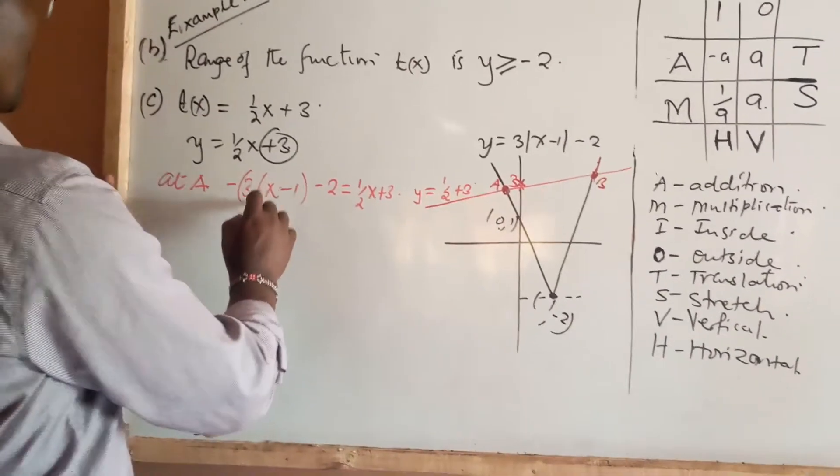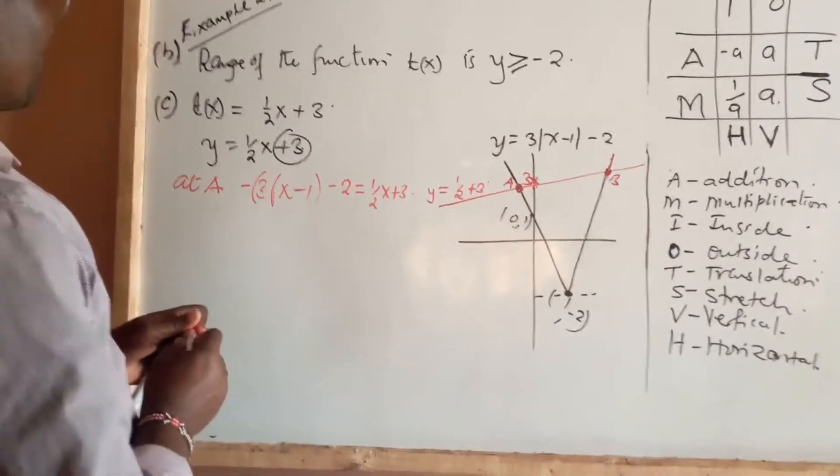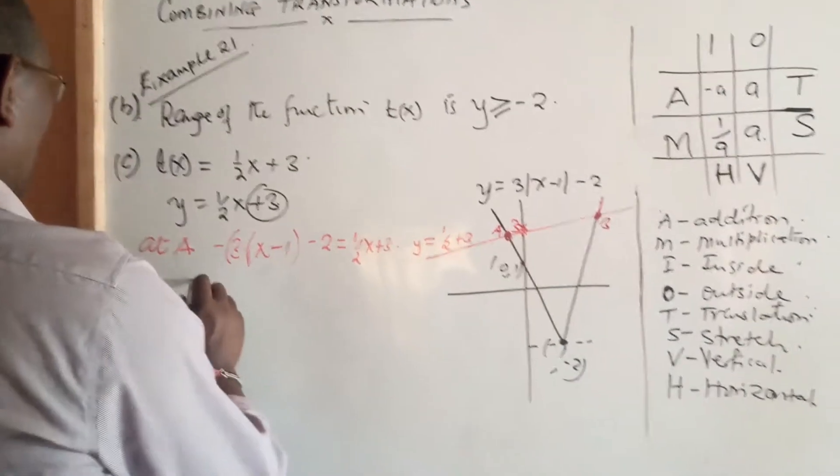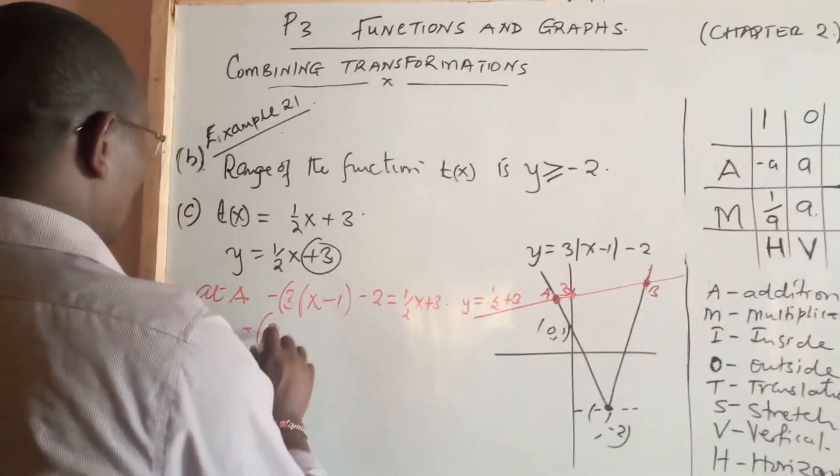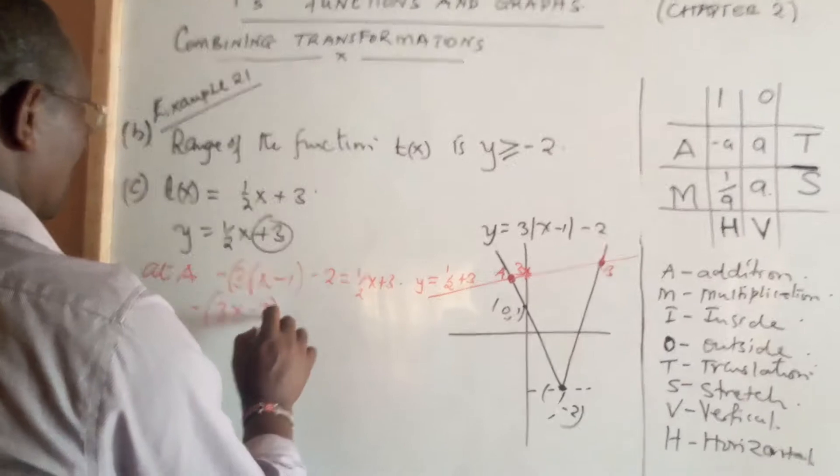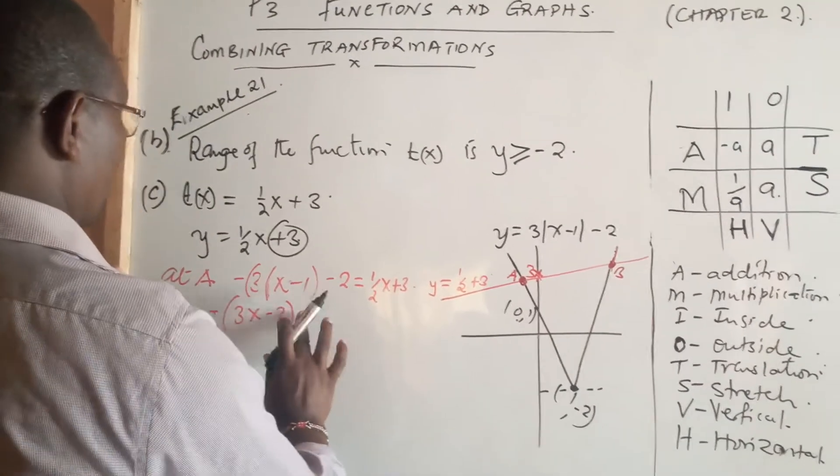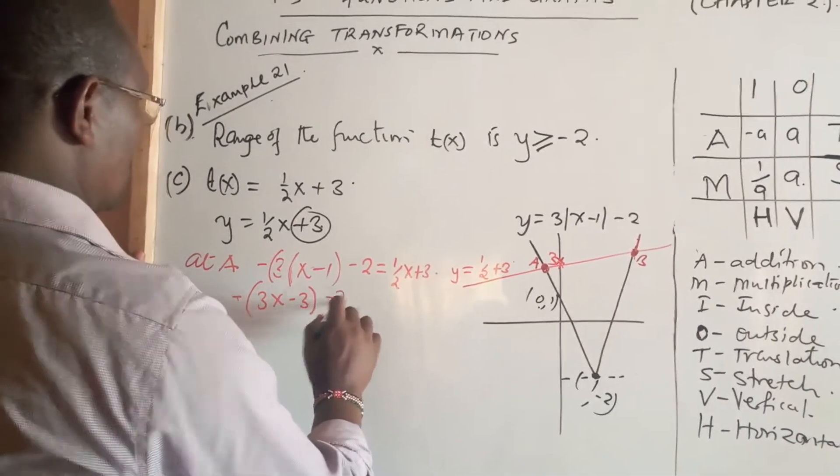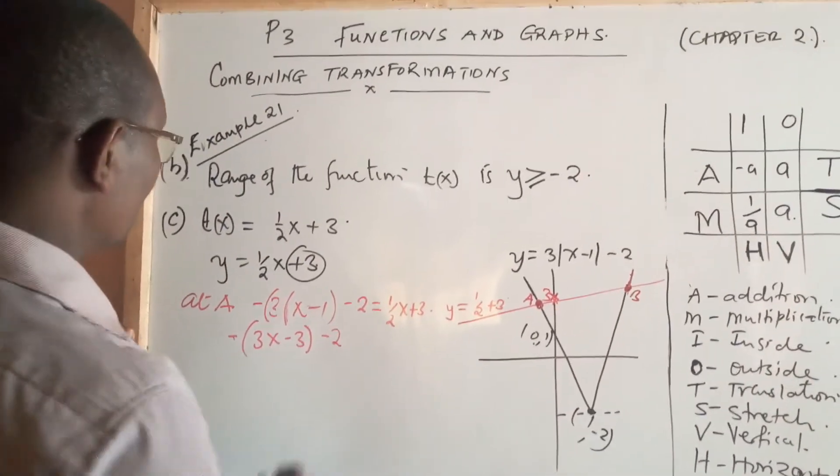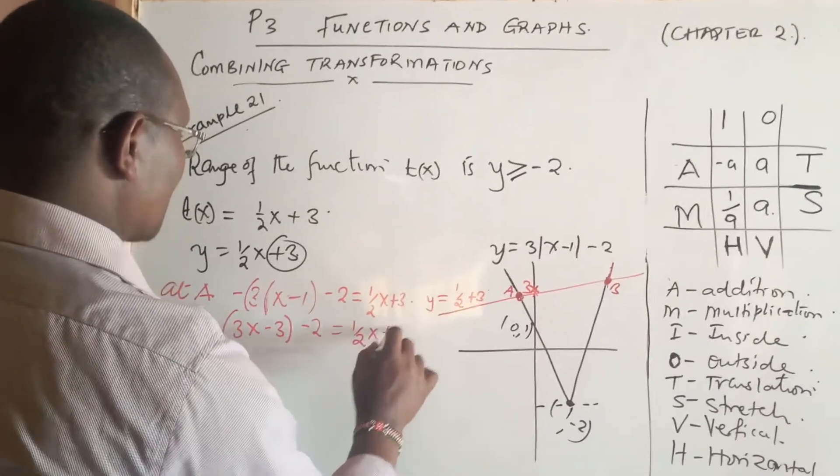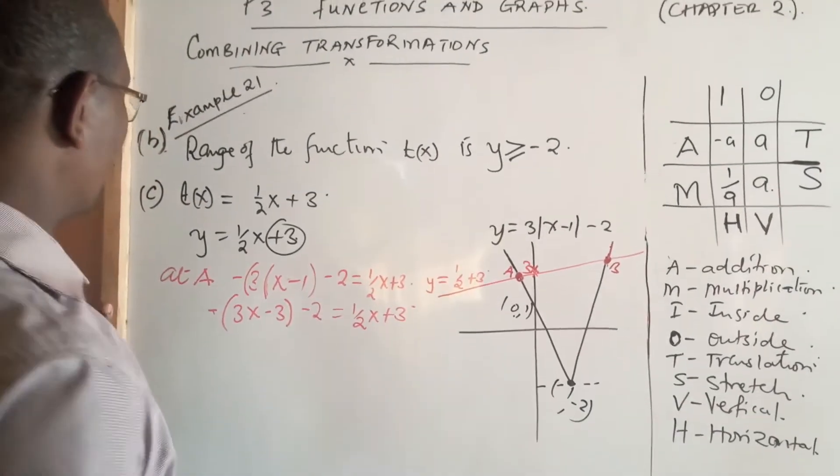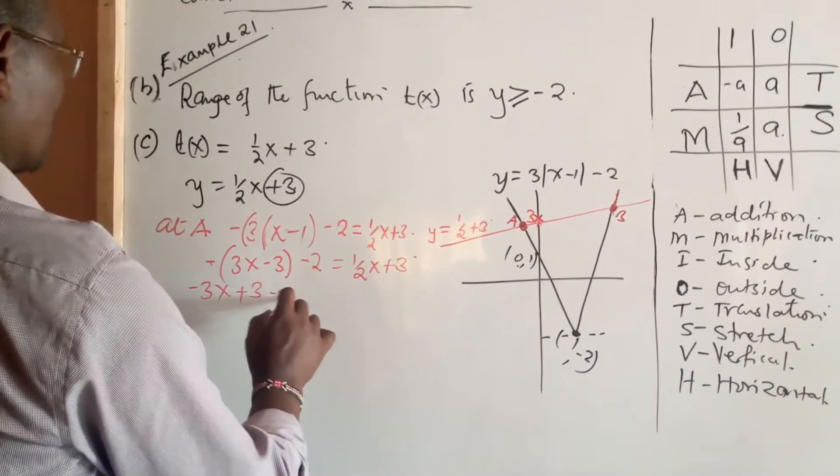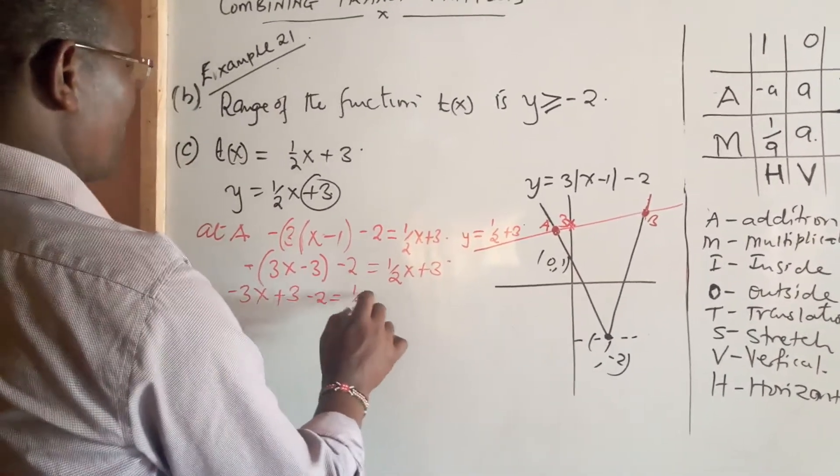And, we only need now to open these brackets and find the value of x. And we're going to say, -(3x - 3) - 2 = (1/2)x + 3. Opening this bracket, you have -3x + 3 - 2 = (1/2)x + 3.